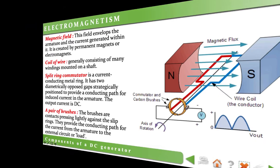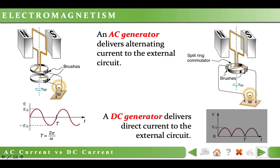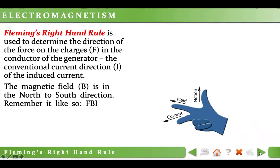An AC generator delivers alternating current to the external circuit — a current which continuously swaps direction, flowing one way and then the opposite. A DC generator delivers direct current, which flows only in one direction. To determine the direction of induced current in a generator, we use Fleming's right hand rule. We hold our right hand as shown: the thumb points in the direction of the force applied on the wire, the index finger points in the direction of the magnetic field, and the middle finger points in the direction of the induced current. We can remember this as FBI — Force, magnetic field (B), and current (I).